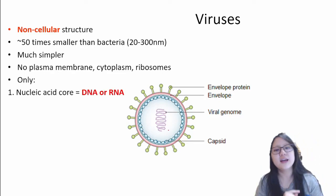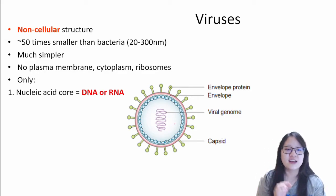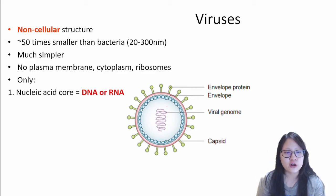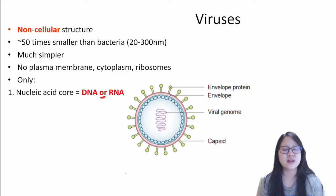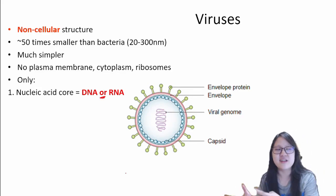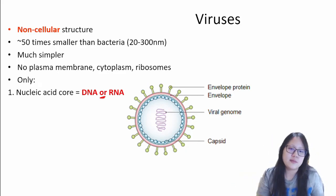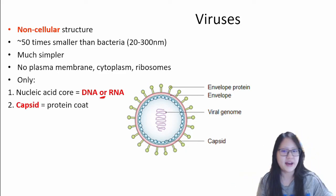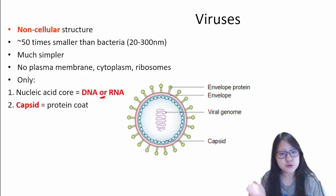Number 1: it has DNA or RNA at the nucleic acid core. So basically, DNA and RNA is in the center. There are RNA viruses and DNA viruses, so that depends on the type of virus.